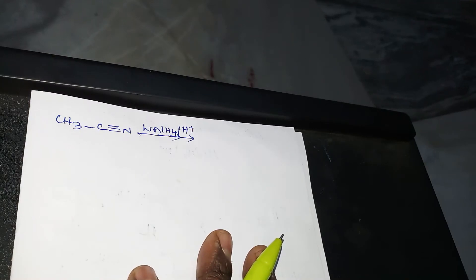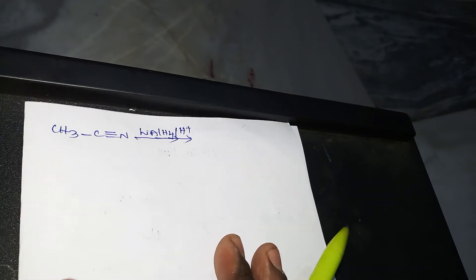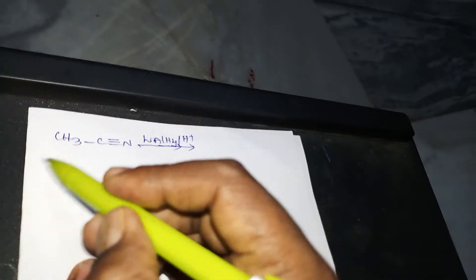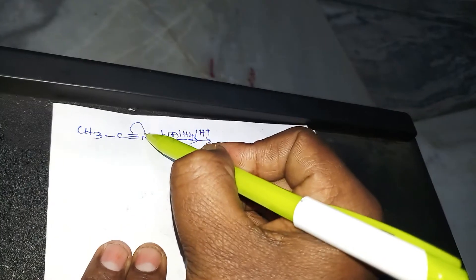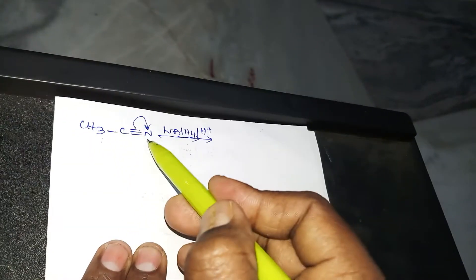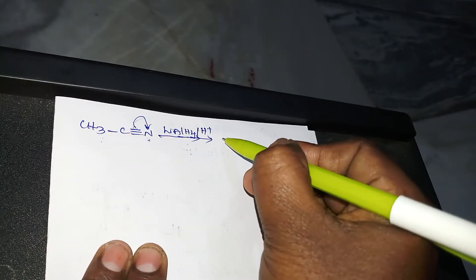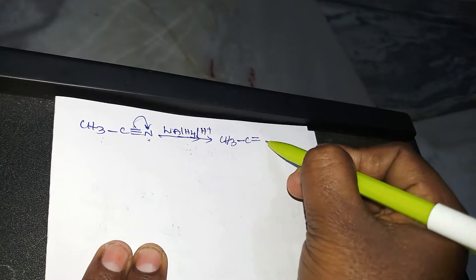Now here, lithium aluminum hydride is one of the vector reducing agents. The example is the reduction of cyanides — CH3CN. This bond is shifting towards the right-hand side due to the +I effect, though negative, the nitrogen attracting group. That's why this bond shifts towards the right-hand side, and we get CH3 C double bond N.